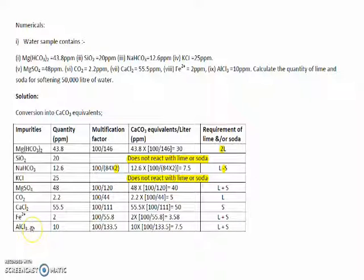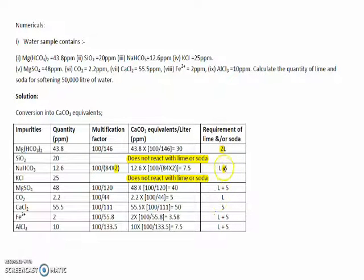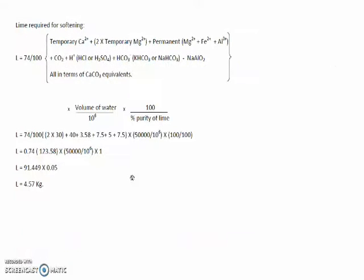AlCl₃ consumes both lime and soda. One important rule: Fe²⁺ salts (like FeO) consume lime as well as soda, but Fe³⁺ salts should not be considered while calculating lime or soda — ferric chloride and similar salts are treated as impurities that do not react with lime or soda. From the table, we can now determine which salts are added to or subtracted from the lime and soda formulas. One can use the formula directly, replacing generic ions with the salts present in the given water sample.